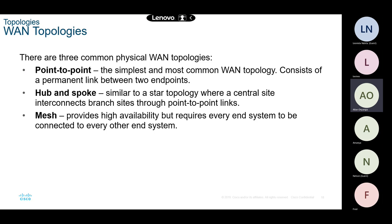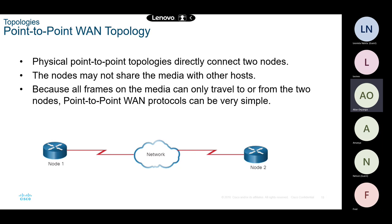Hub and spoke looks like a star — one router in the middle connected to many other routers all around, like many point-to-point connections joined to one site. Then there's mesh topology, which looks like a wire mesh where all routers are interconnected to each other, providing a very great degree of availability. We'll cover mesh topology later in the enterprise networking module.